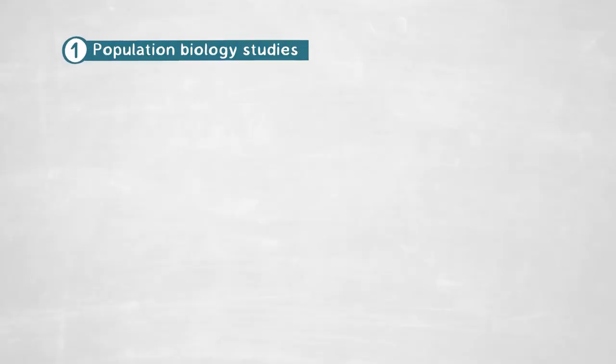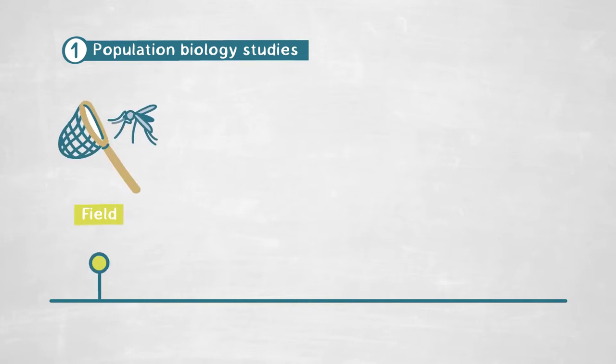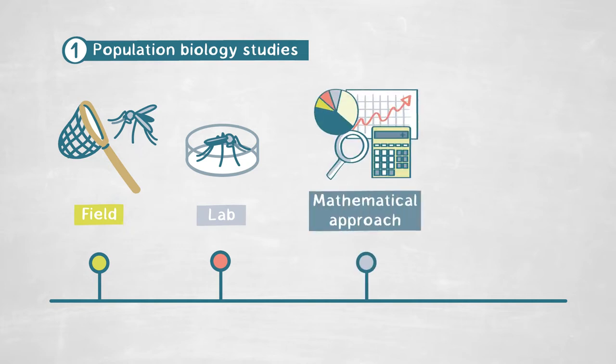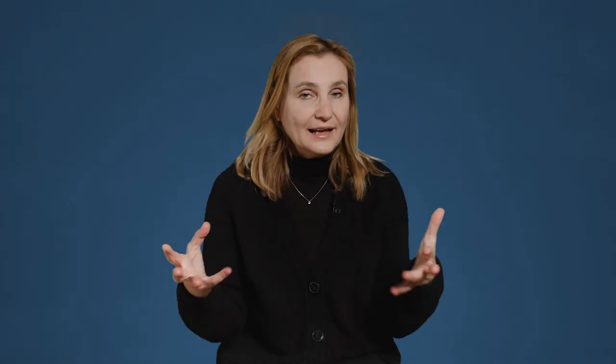In the laboratory, we employ a series of methods to understand how mosquitoes transmit malaria. That involves population biology studies in the field, where we trap mosquitoes, bring them to the lab, and analyze using mathematical approaches the composition of mosquito populations in the wild. It's interesting because there is more than one single vector in the population — we can find different vectors located in the same population, and the question is which one is involved in malaria transmission.